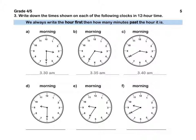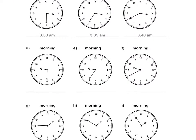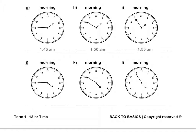Press play for question G. Let's continue. G. Our hour hand is in between the 1 and the 2, almost at 2 o'clock. The minute hand is on the 9 so that means that it is 45 minutes past 1.00 AM. We always write time as how many minutes past the hour it is. It is not yet 2 o'clock so we do not write 2.00 AM. The answer is 1.45 AM because it is morning time.